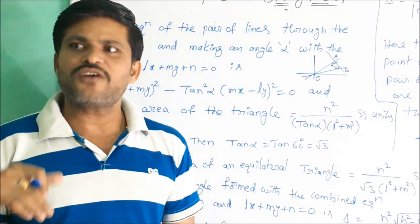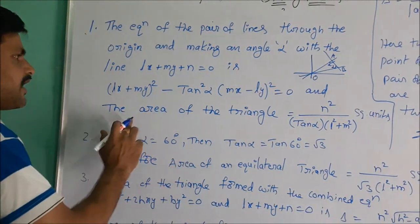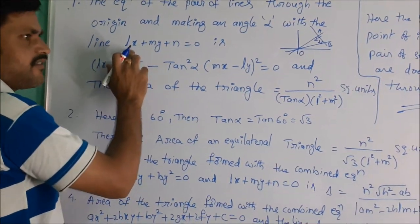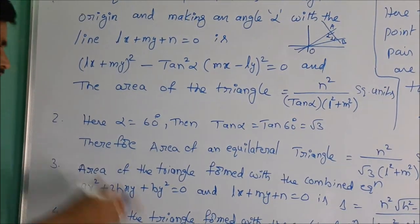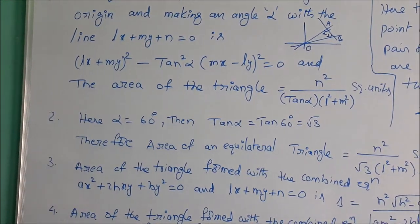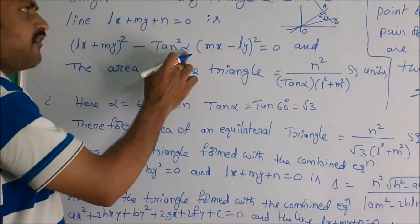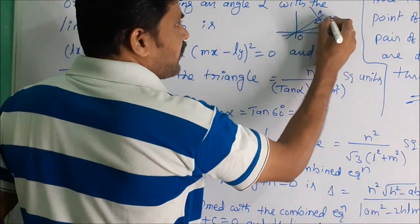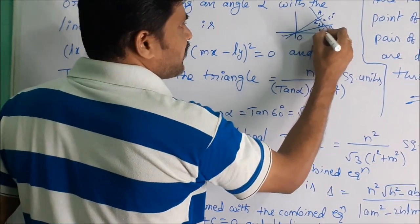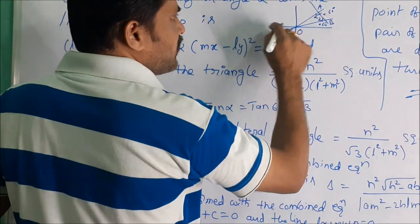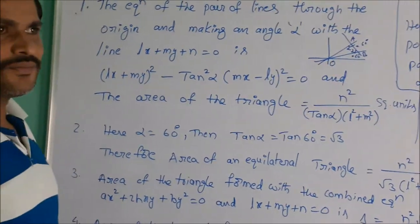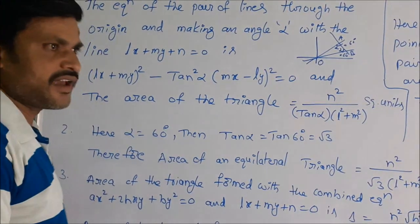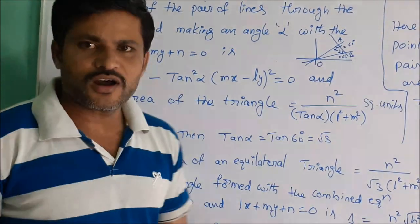Next, we find the area of the triangle formed with the combined equation and the given line lx + my + n = 0. For the second case, if alpha = 60°, we observe that this triangle is an isosceles triangle since any two angles in the triangle are equal.